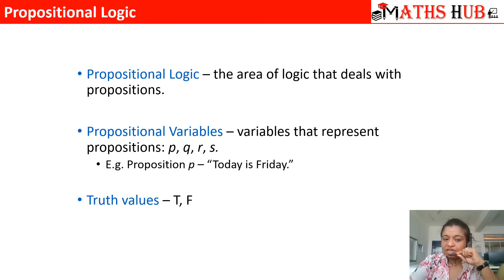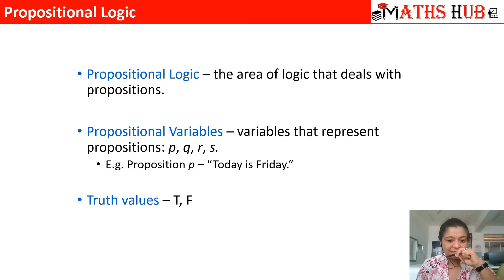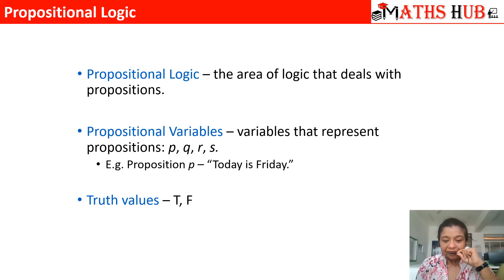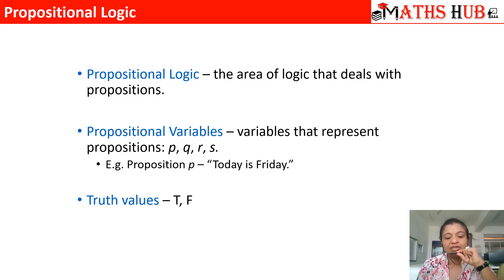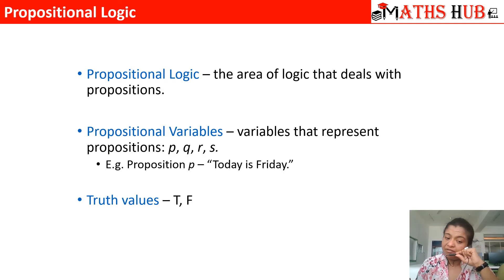The area of logic which deals with propositions is termed as propositional logic. Since we are going to do the maths behind it, wherever we have a statement it is not easy to write it again and again, so we write the statement with the help of symbols. Any alphabet can be used, but the general alphabets used are P, Q, R, and S. All variables representing propositions are called propositional variables.